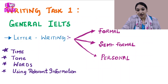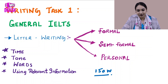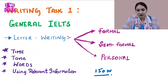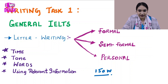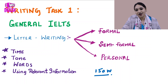Writing Task 1 for General IELTS is different. Here, students are expected to write a letter in 150 words. That letter writing can be of different types. Again, remember that Writing Task 1 answers are predictable — whatever is expected of you to write in the answer is already provided somewhere in the question.